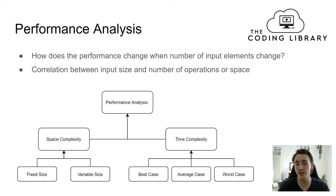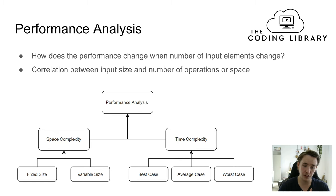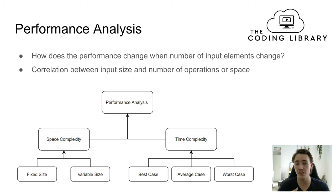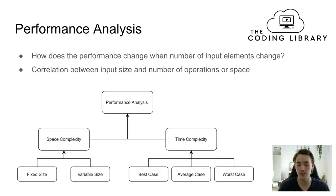Inside of time complexity you have a best case scenario, an average case scenario, and a worst case scenario for operations on our data structures and the algorithms we write. For space complexity, we can have a fixed size or a variable size compared to the number of input elements in an array.